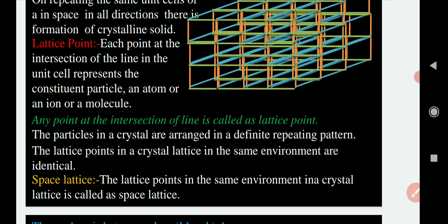You must remember what a unit cell is and what a lattice point is. On the basis of the shape of the unit cell, we have got seven types of crystal systems, which we will see in the next topic.